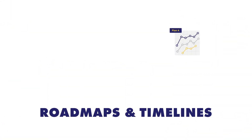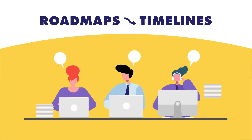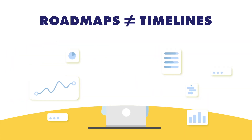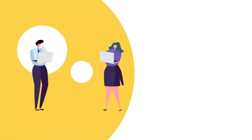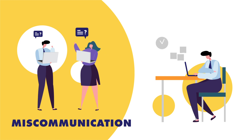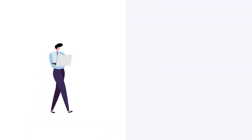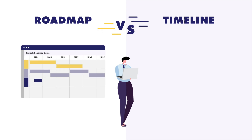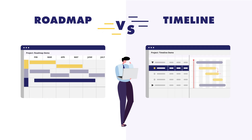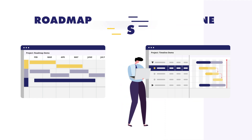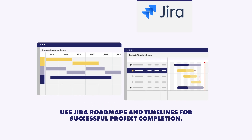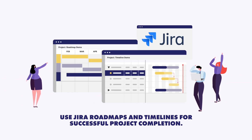Roadmaps and Timelines. Many project managers use these terms interchangeably, but they aren't the same. Getting them mixed up can confuse others and sink overall productivity. The good news is that you can easily tell roadmaps and timelines apart using four distinct features. Even better, you can use both roadmaps and timelines in Jira to successfully complete your projects.